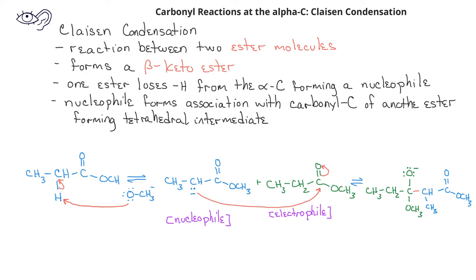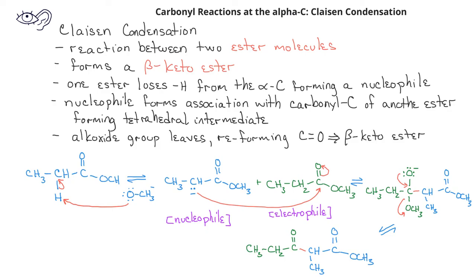This tetrahedral intermediate will then lose the alkoxide group as a leaving group, reform the carbonyl-carbon oxygen double bond, and it will form the beta-keto ester.